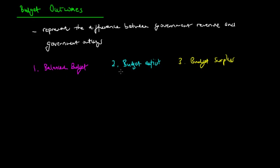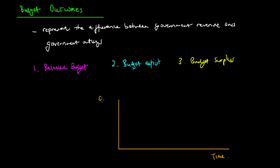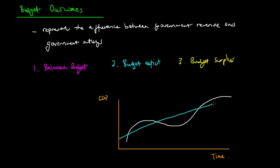We're going to look at where these three budget outcomes can take place with respect to the business cycle. Looking at the business cycle, with time on the horizontal axis and GDP on the vertical axis, the business cycle tends to fluctuate in a cyclical fashion, with a trend line running through it. This is the line that we want economic growth to stay as close to as possible, so that fluctuations are not too large and economic activity remains predictable.